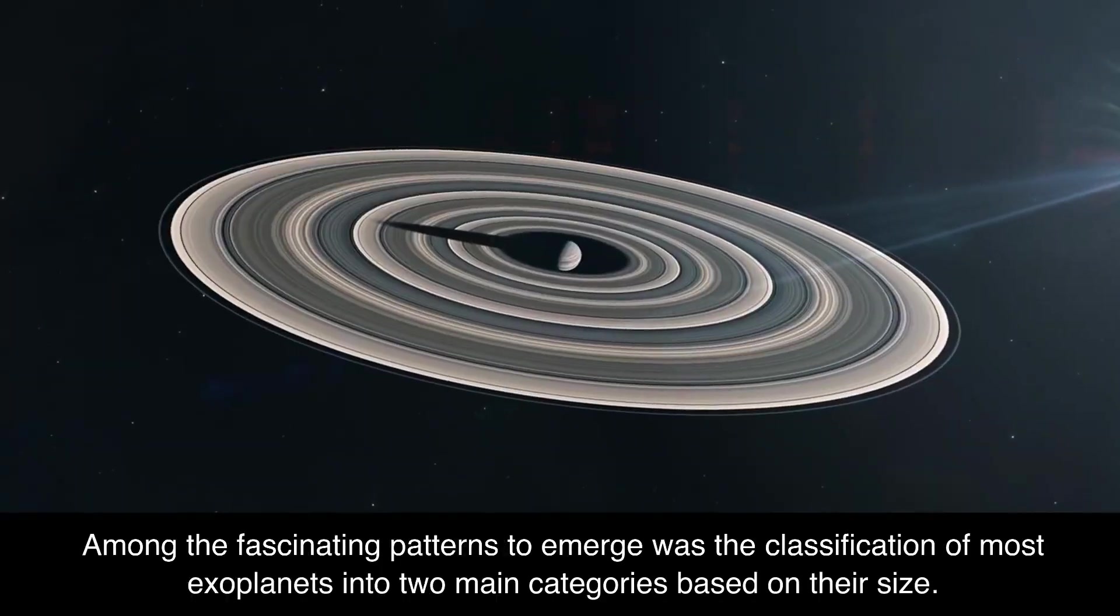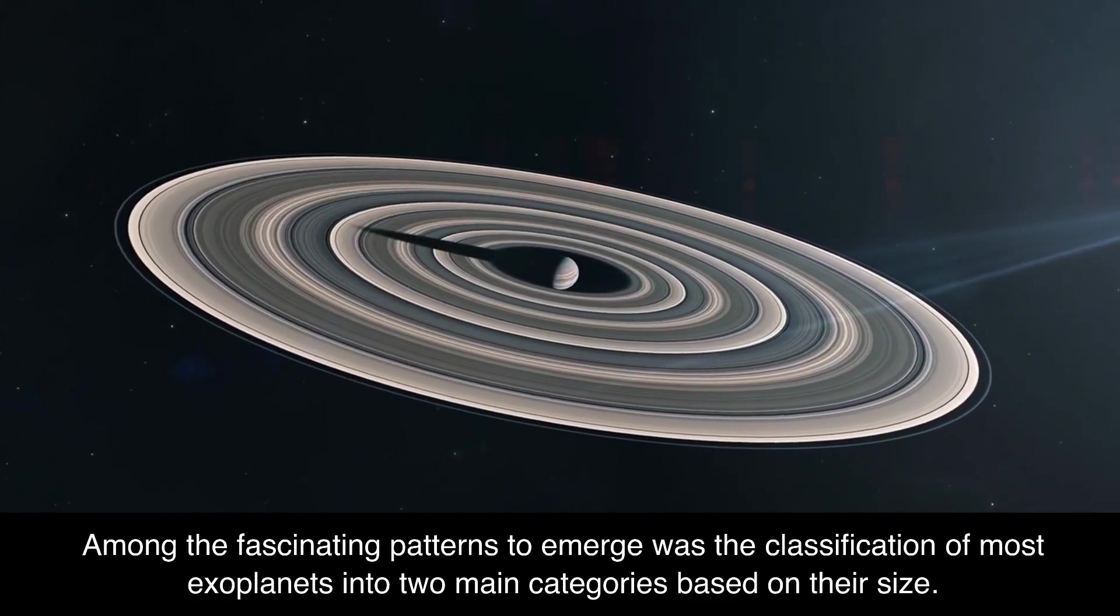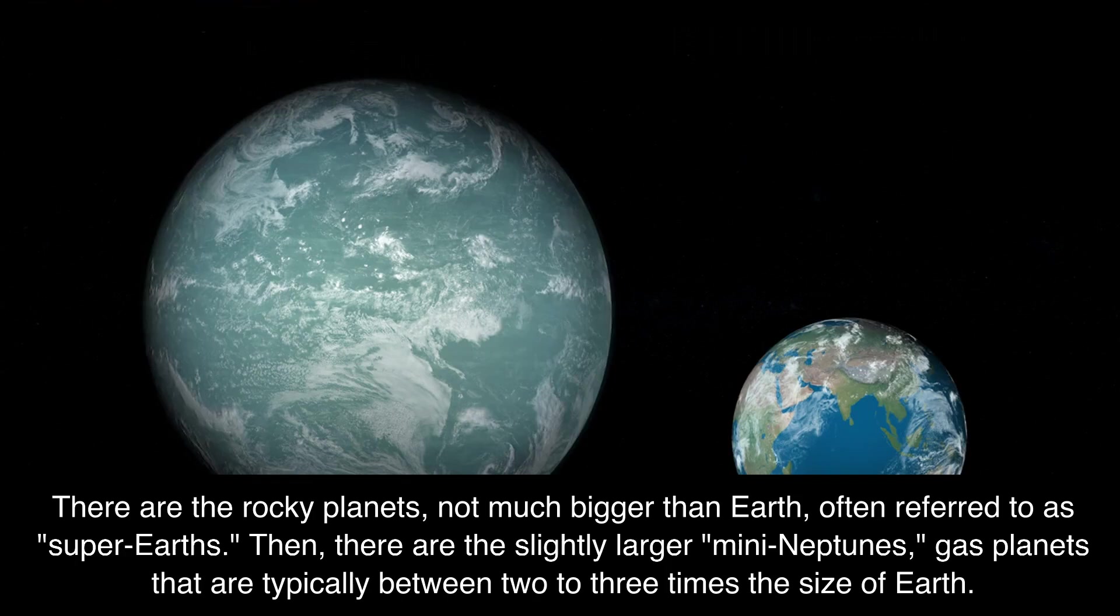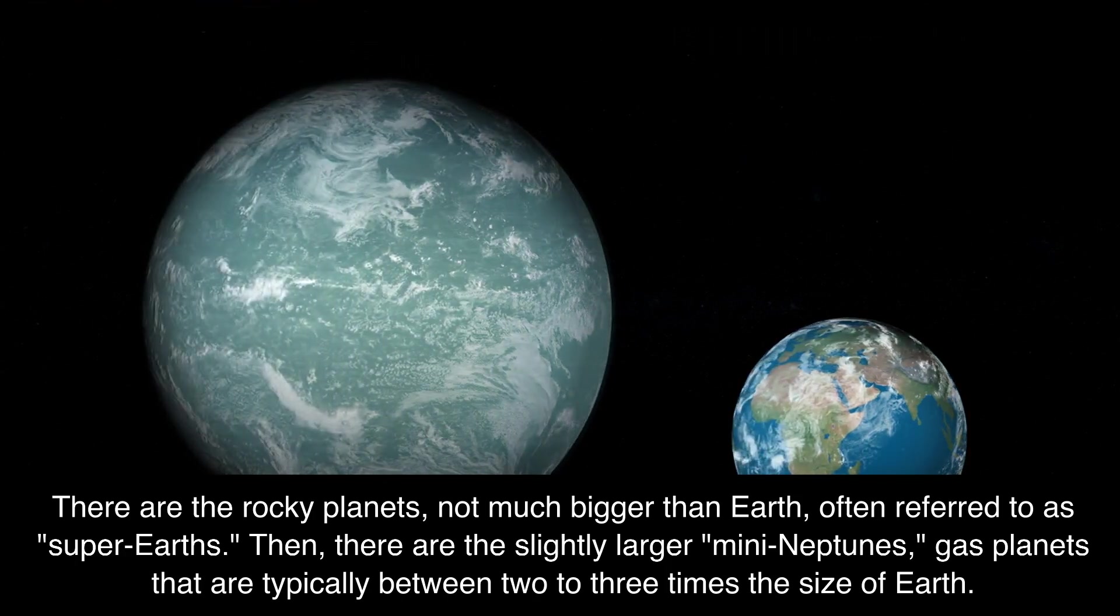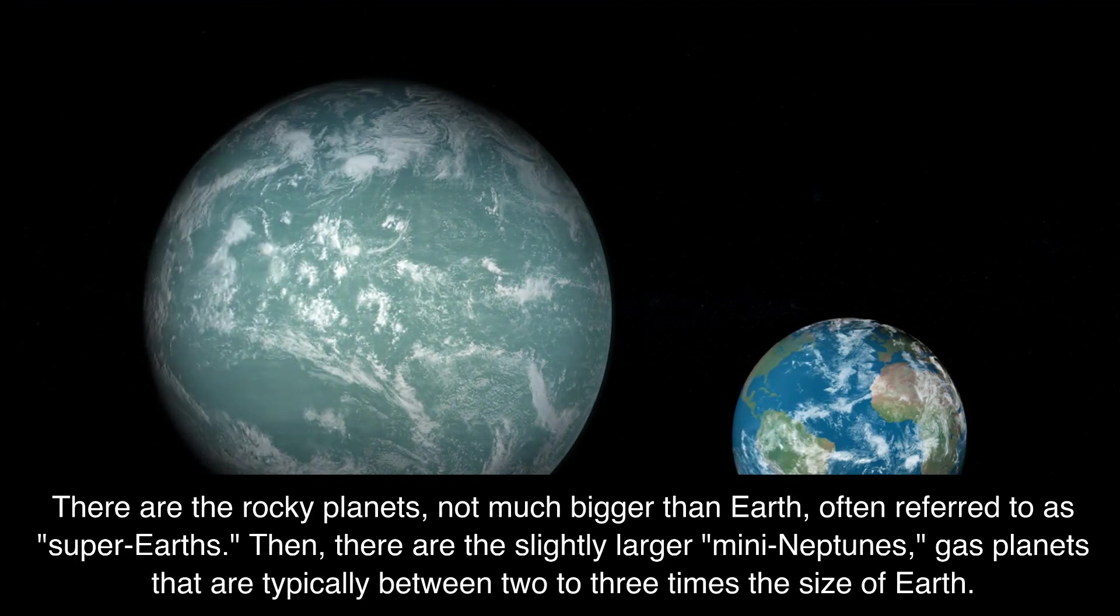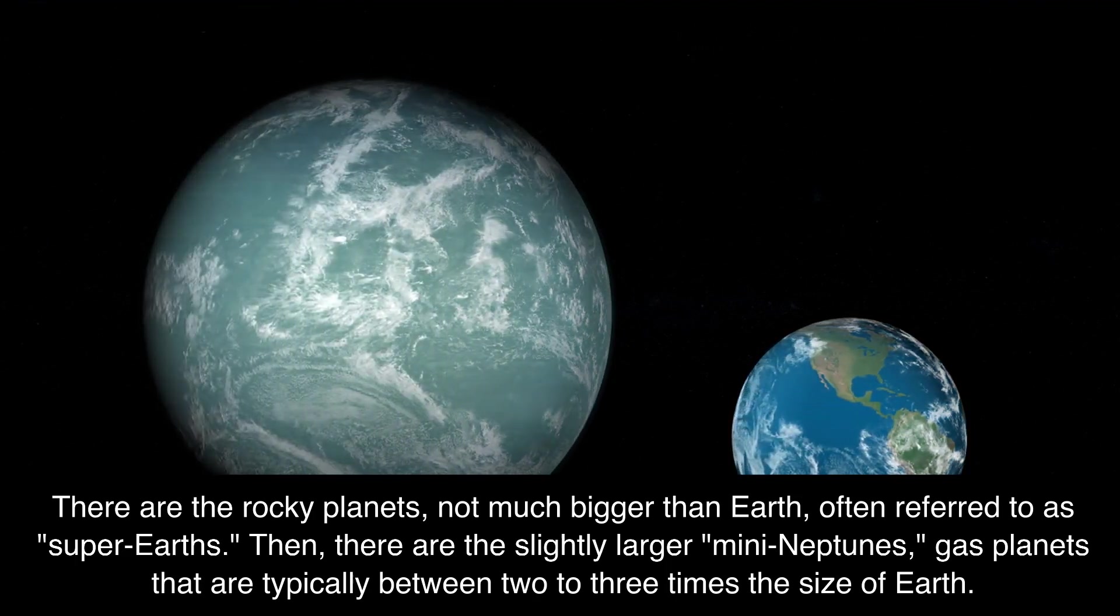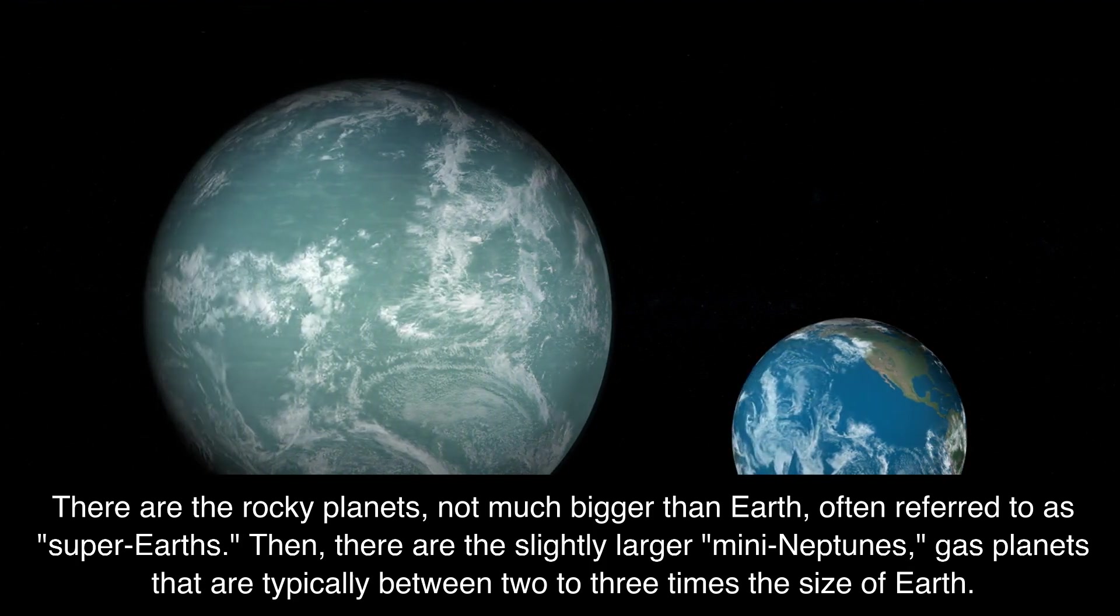Among the fascinating patterns to emerge was the classification of most exoplanets into two main categories based on their size. There are the rocky planets, not much bigger than Earth, often referred to as super-Earths. Then there are the slightly larger mini-Neptunes, gas planets that are typically between two to three times the size of Earth.